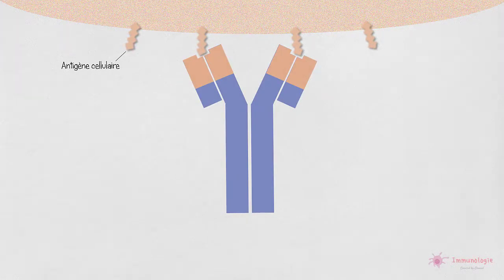Cette flexibilité est conférée en grande partie par une région charnière située entre les domaines CH1 et CH2 et qui a une longueur variable entre les différents isotypes. Passons maintenant aux chaînes légères.